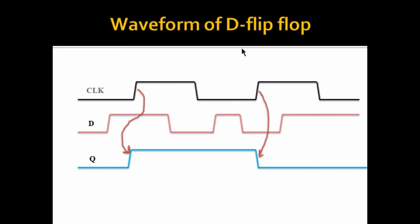This is the waveform of the D flip-flop. The data which is present when the clock is transitioning from 0 to 1 is what gets reflected at the output, and that same data remains until the next rising edge. At the next rising edge, if the data is low, that low value gets reflected and stays until the following rising edge. So the data is only changing at the rising edge for a positive edge triggered flip-flop.